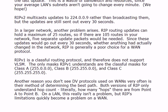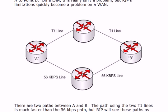RIP is generally a poor choice for a WAN. RIP version 1 in particular is a classful routing protocol — it doesn't even support VLSM. RIP v1 updates do not carry subnet mask information; the only masks it understands are the three classful masks for Class A, B, and C. But here's a big reason you don't see distance vector protocols on WANs very often: the Bellman-Ford algorithm only considers hop count in computing its metric.